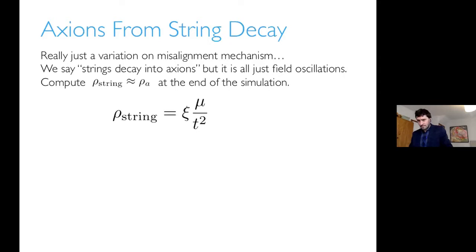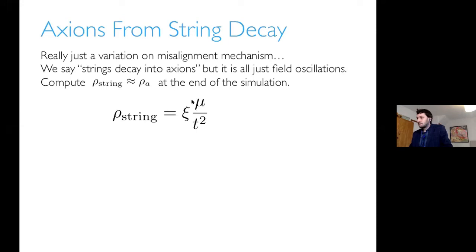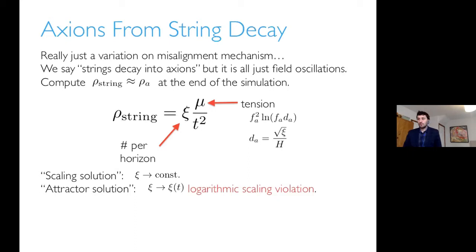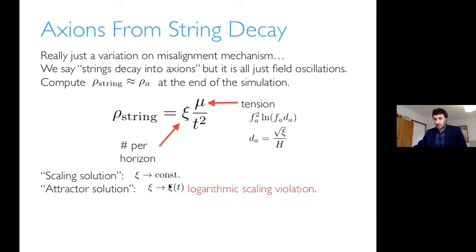The string density is expressed as the string tension times the energy density per unit length divided by T-squared, giving a number per horizon. It's this number of strings per horizon which is the subject of interest. It was believed this goes to a constant — the so-called scaling solution of order one. However, it has since been noticed that there may be scaling violation, and there's actually an attractor solution with a logarithmic time dependence. That's why you have to do lots of simulations to check whether these scaling or attractor solutions exist.